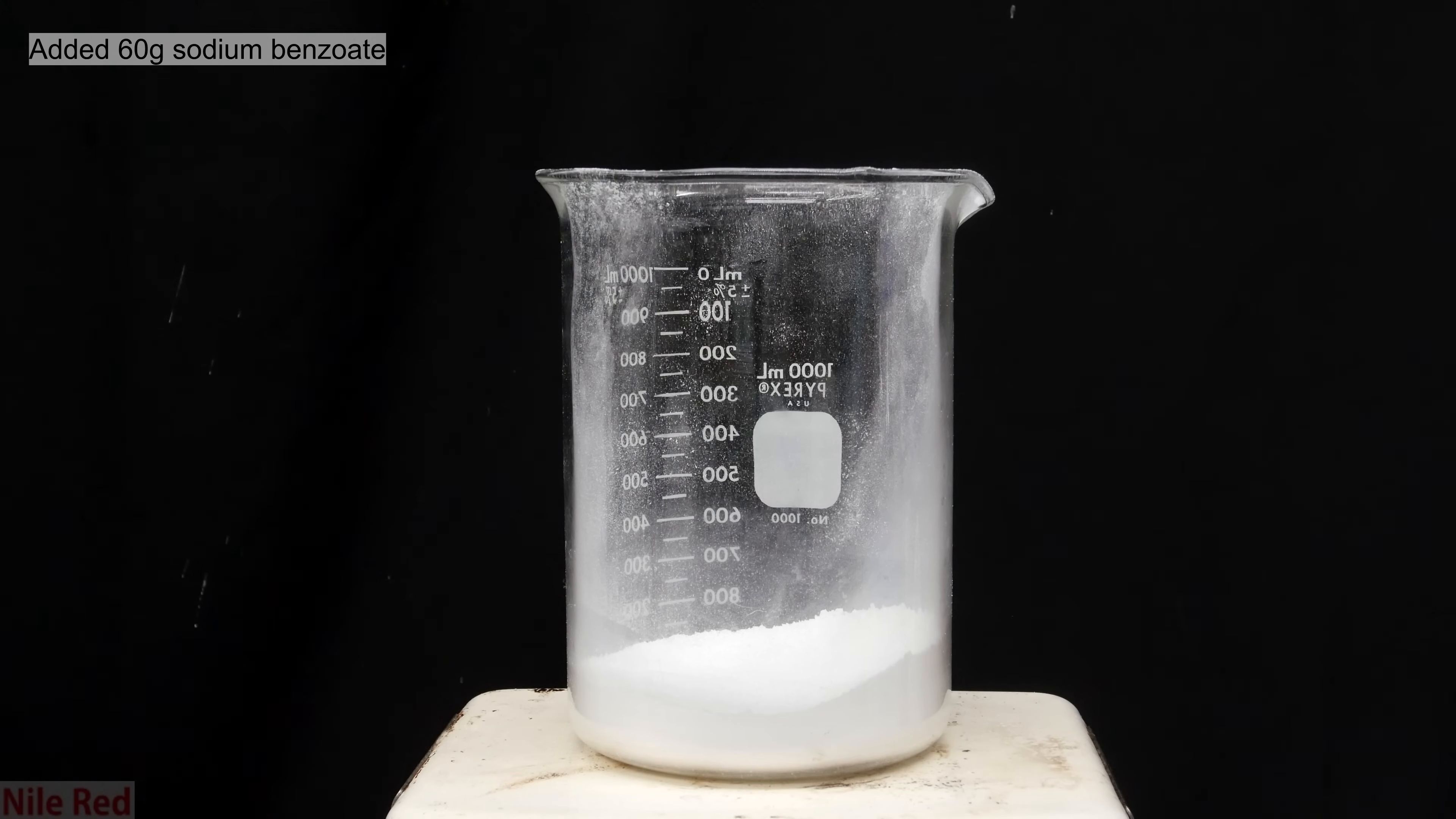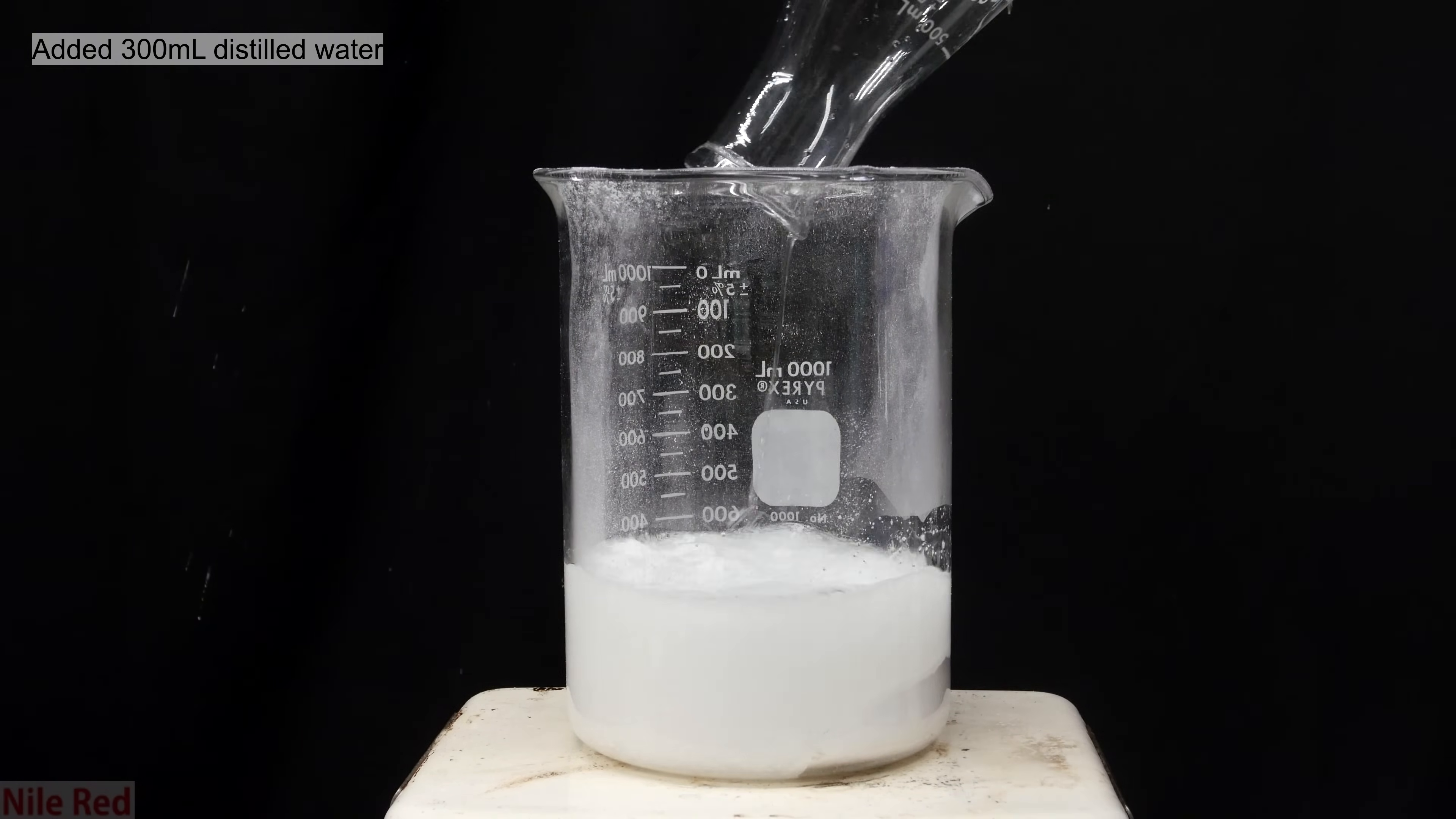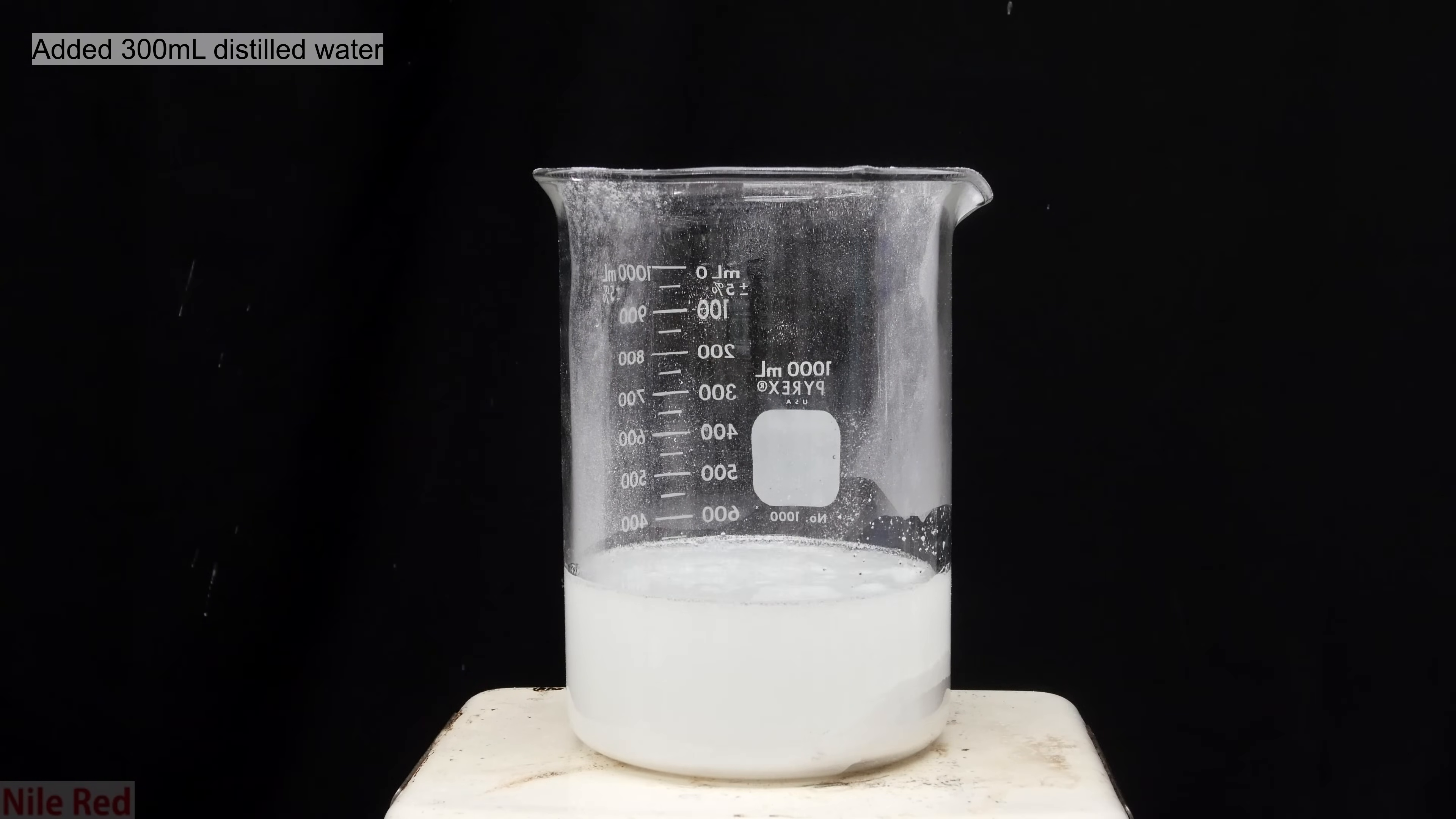So to start off, 60 grams of sodium benzoate is weighed out and placed into a beaker. I then poured in 300 milliliters of distilled water. The sodium benzoate is then mixed into the water until it fully dissolves.